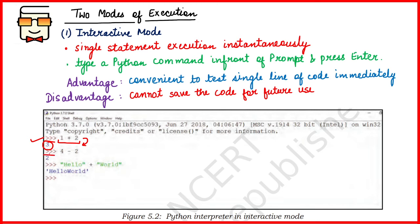In front of the next prompt you type the next instruction and get the next result, and so on. The advantage of interactive mode is that it is used for quick testing of your code — if you're unsure about syntax or output, you can type a command and immediately see the result. The disadvantage is that you cannot save these commands for future use; if you want to see a previously executed command's result, you have to retype it.